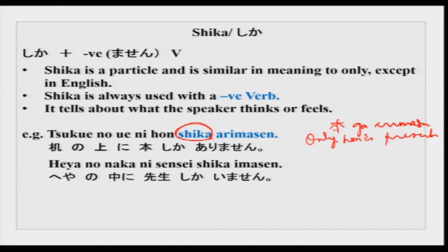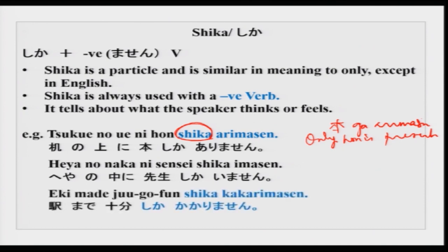When you use shika, you feel strongly about that situation. For example: ekimade jugohun kakarimasu is a simple statement — it takes 15 minutes to the station. But ekimade jugohun shika kakarimasen — it only takes about 15 minutes, so it is not that far — it only takes approximately 15 minutes to the station. This is how you will use shika in your conversation. Please remember shika will always come with a negative word.